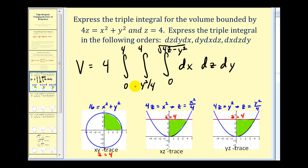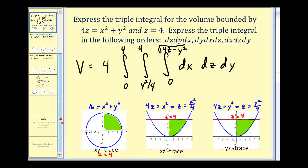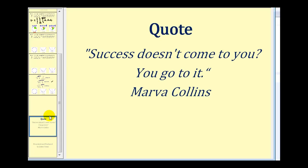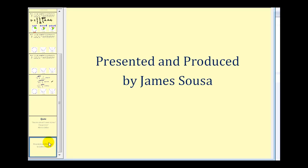So now we've completed three different triple integrals that represent the same volume of that three-dimensional region. You may want to try working some of these out to see if you get the same answer, but the middle one becomes very challenging to integrate. It is often helpful to think about the order of integration when setting up a triple integral, because it will affect how difficult it is to integrate.